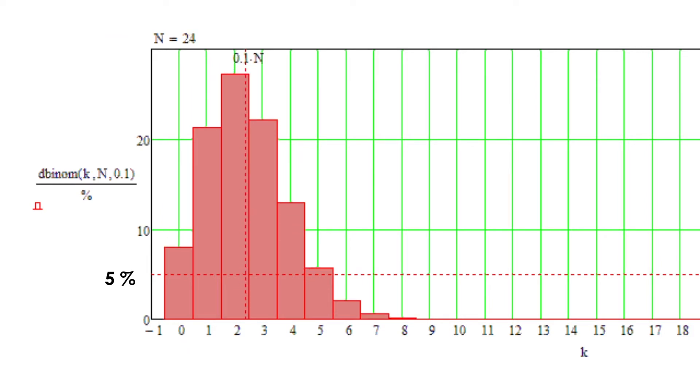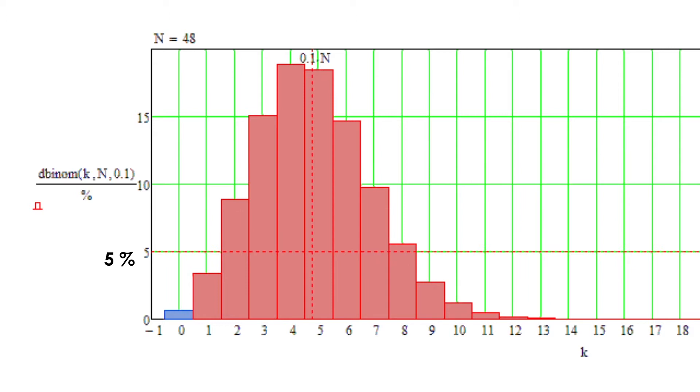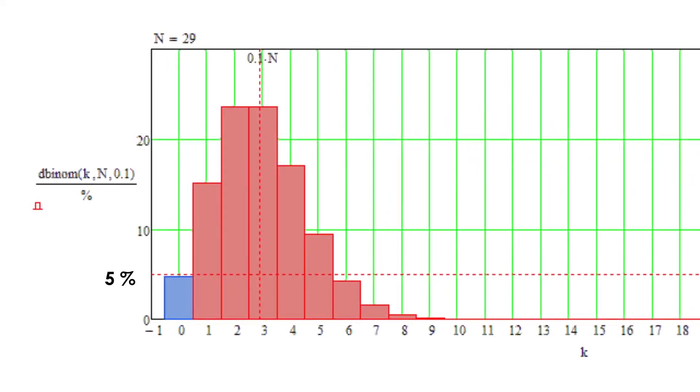The number we need is when the likelihood of having zero failed parts drops below 5% and thus leaving 95% confidence that we would see at least one failure if the reliability is less than 90%. In our case, it is 29 transmissions.